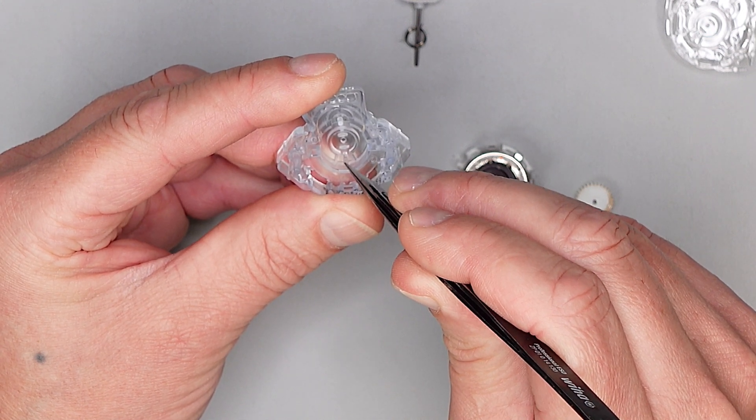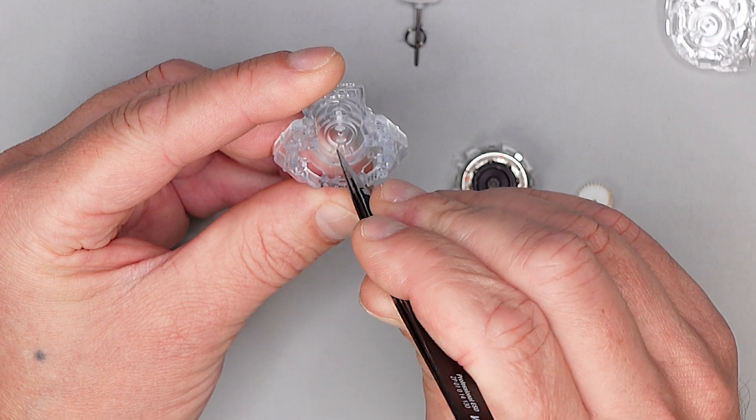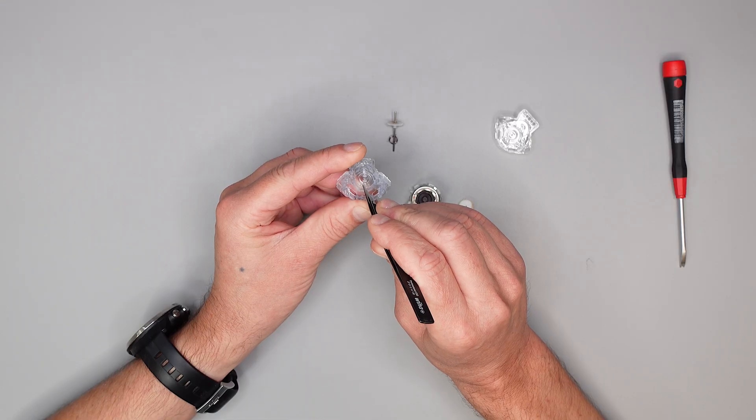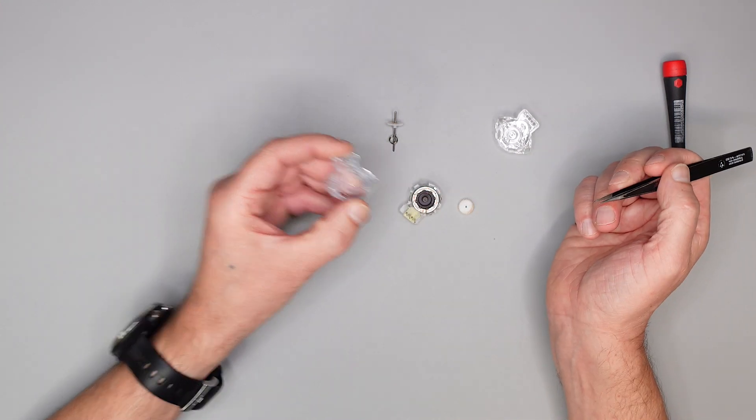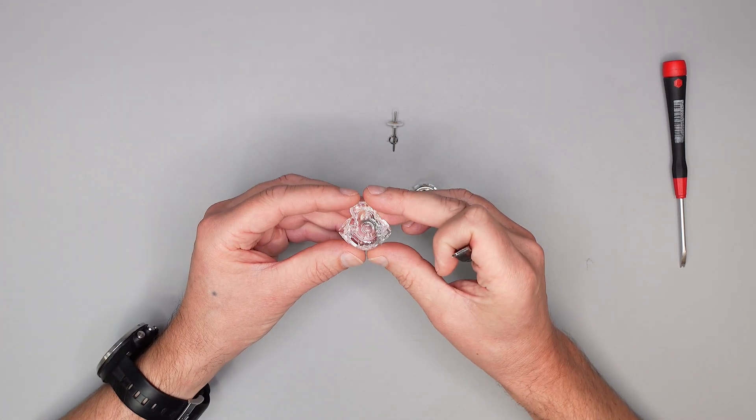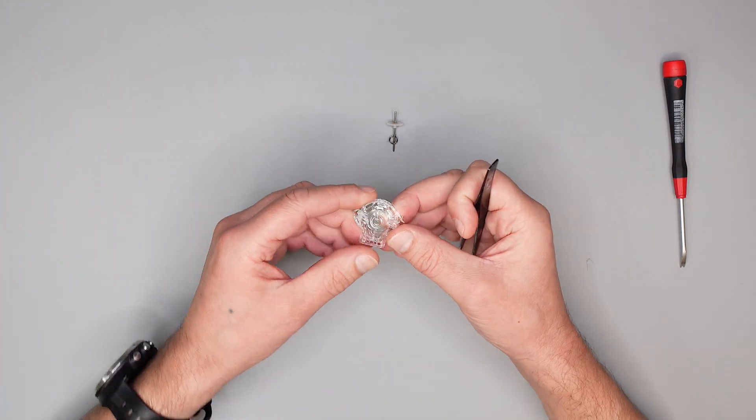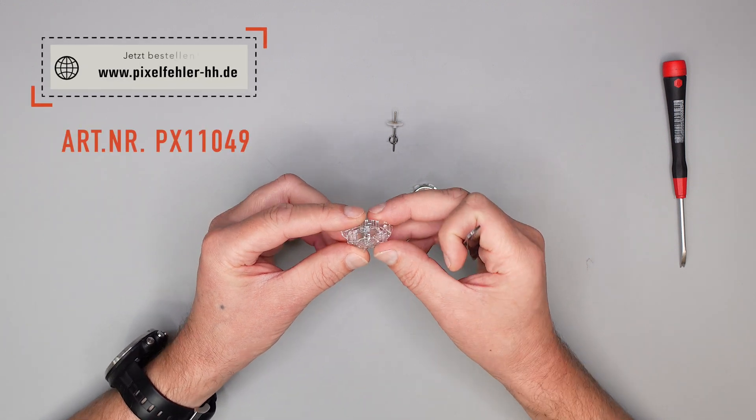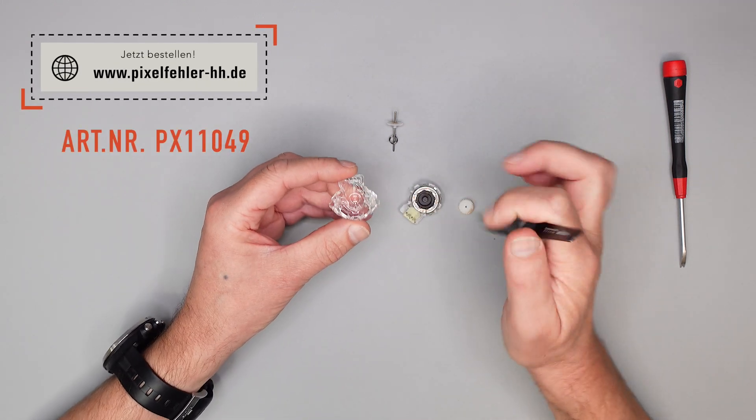Hier haben wir diese kleinen Taschen links und rechts. Ich nehme immer die linke hier für die Feder zur Vorspannung. Die Kappe können wir rausheben. Hier haben wir die neue Kappe, das ist unser Ersatzteil. Könnt ihr auch bei uns im Onlineshop kaufen, Ersatzteilnummer PX 11049.